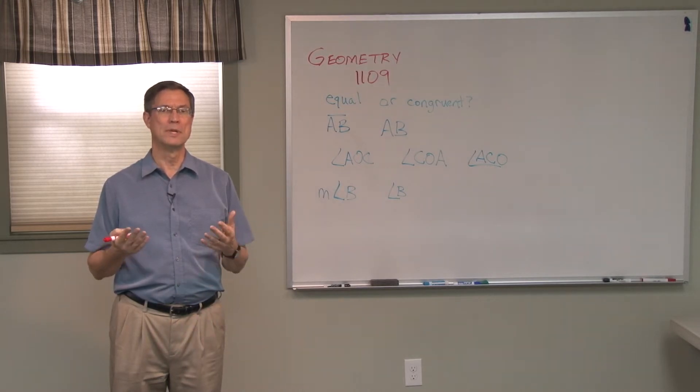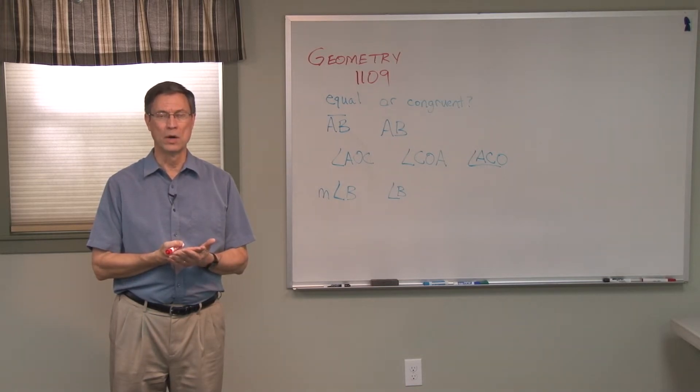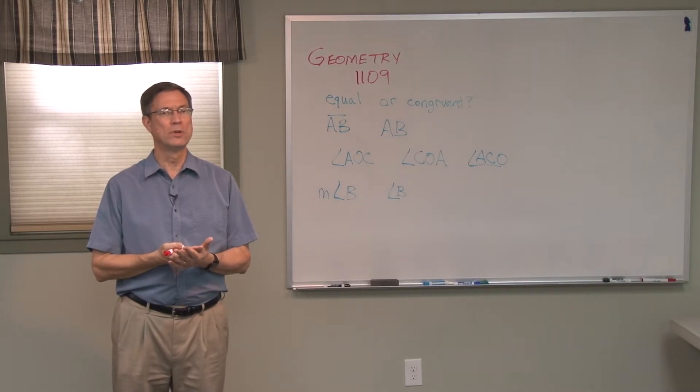The term congruent has to do with two geometric shapes being exactly the same—the same length or size. You could lay one on top of the other one and it would be like a twin. They match.